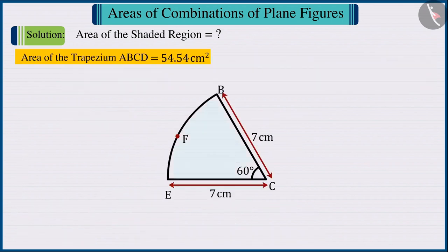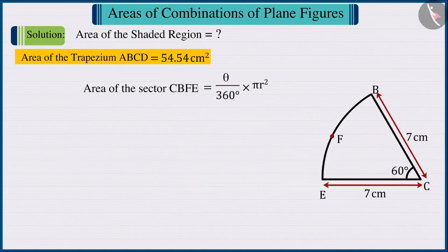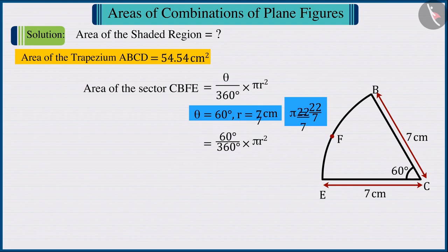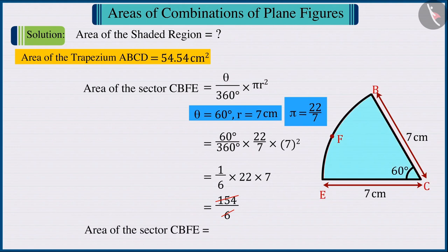Let's now focus on the sector CBFE. Substituting the value of theta as 60 degrees and the measure of radius as 7 cm in the formula for the area of a sector, we find the area of the sector CBFE as 25.67 cm².